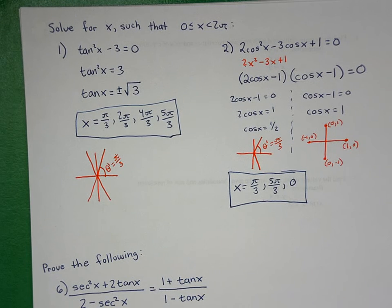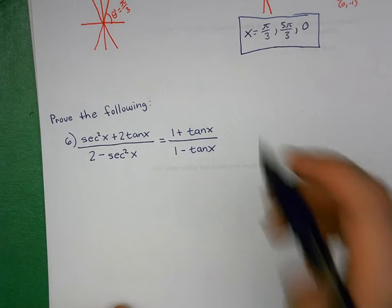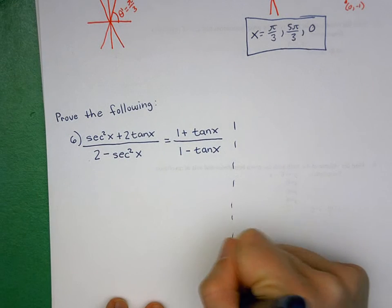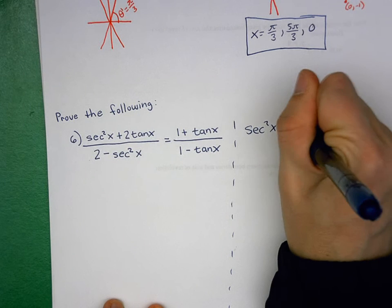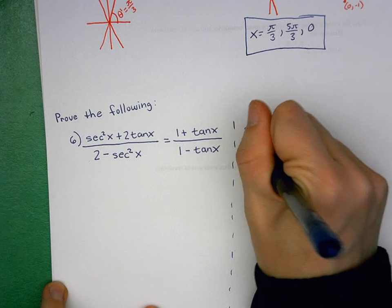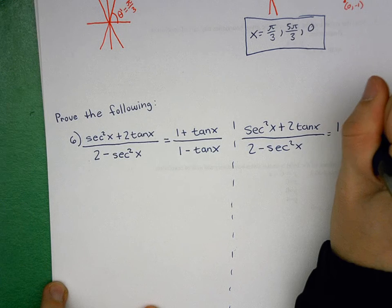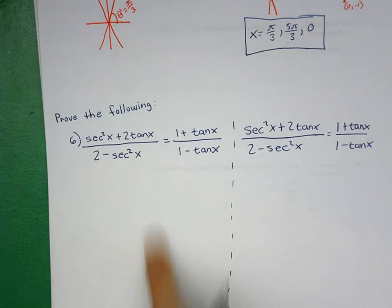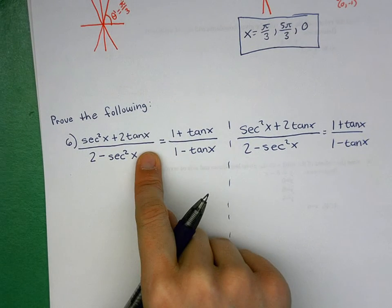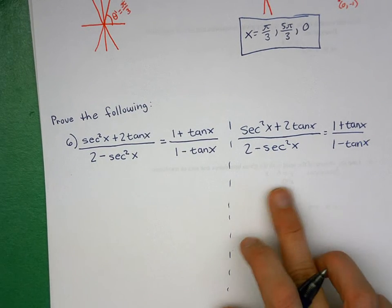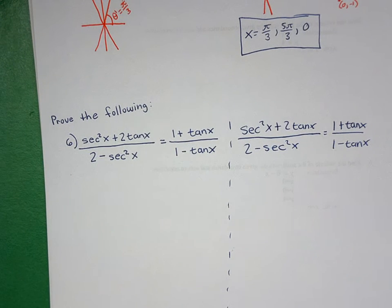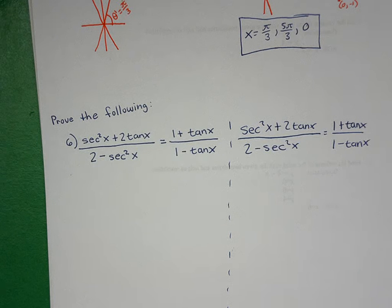Number 6 is potentially a bit challenging to demonstrate because students worked it two different ways. I'll do it both ways so you can check your answer whichever route you took. The expression is (1 + tan x) / (1 - tan x). I'll first manipulate the left side of the proof, then the right side. If you still have questions after watching, feel free to comment on your assignment or email me.